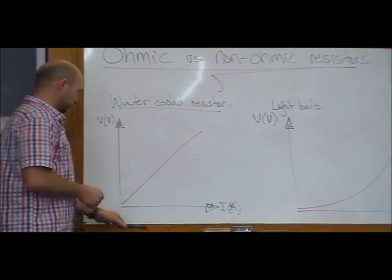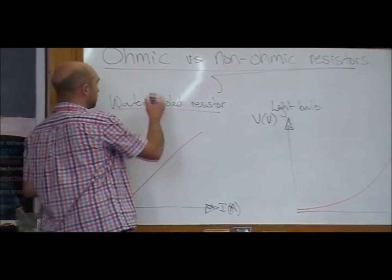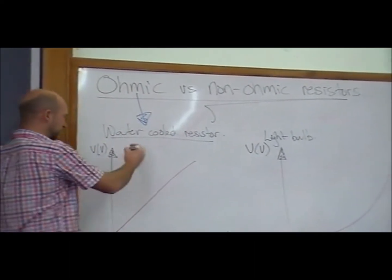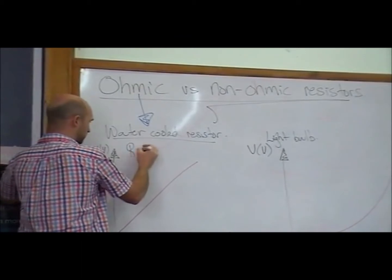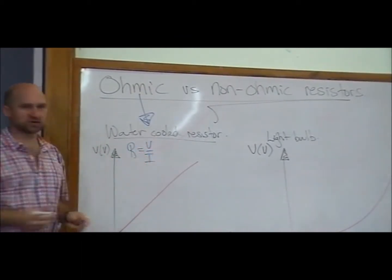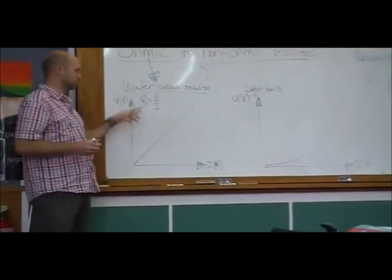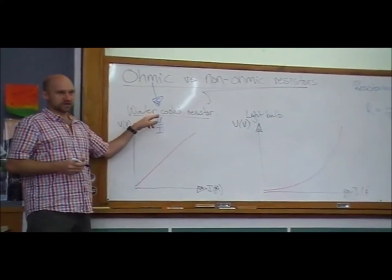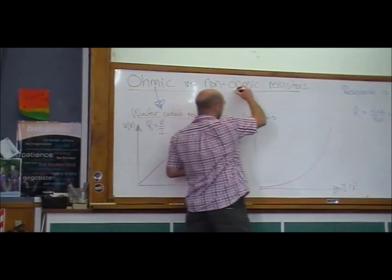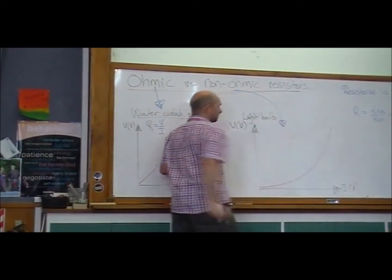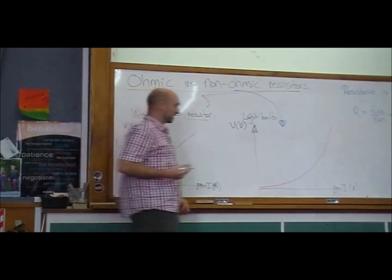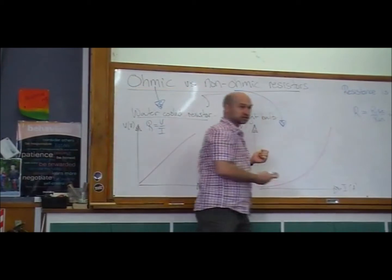This water-cooled resistor is what we call an ohmic resistor. Ohmic meaning applies Ohm's law, which is that R equals V upon I, and that R is constant no matter what. So we can work out how much current we're going to get for a certain voltage, knowing that resistance stays constant. The light bulb is a non-ohmic resistor, meaning that its resistance changes at different voltages and currents.